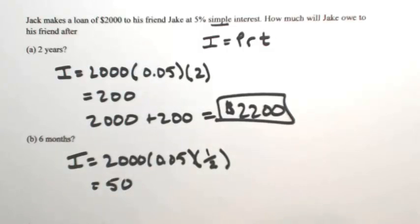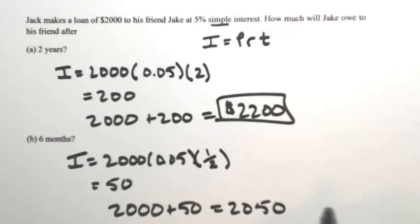On top of the loan, so he's going to owe $2,000 plus $50, so $2,050.